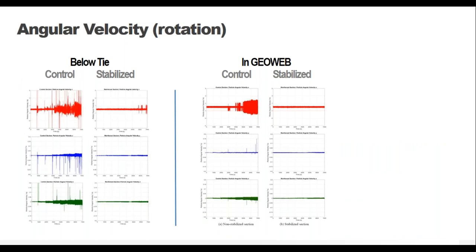This slide shows angular velocity — how fast a particle rotates. The two graphs on the left show smart rocks placed in the middle of the ballast layer, four inches below the tie and four inches above the Geo panel. The two graphs on the right are smart rocks placed inside the Geo panels. You can see the difference between the control section and the Geo-stabilized section. It's very interesting that stabilization not only controls ballast movement inside the Geo cells, but the graphs on the left also show how stabilization controls rotation of the unconfined ballast layer between the tie and the Geo panels.